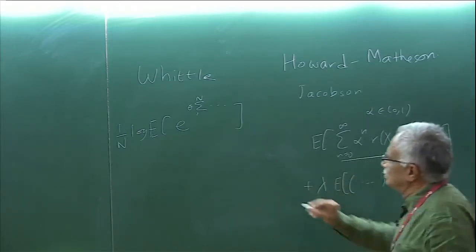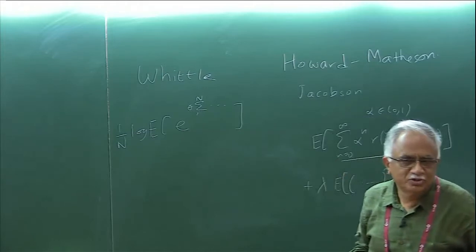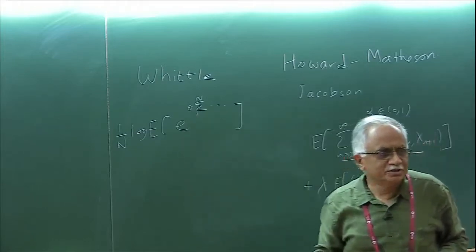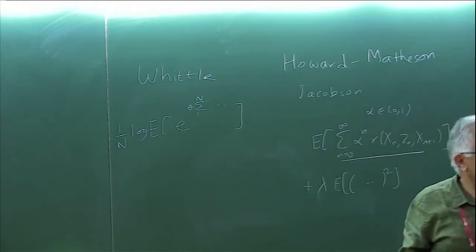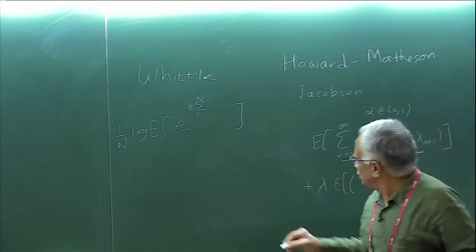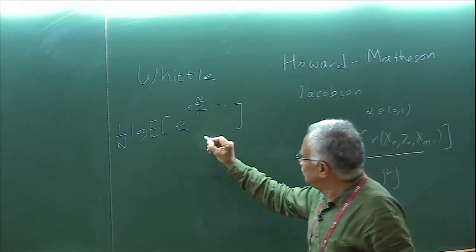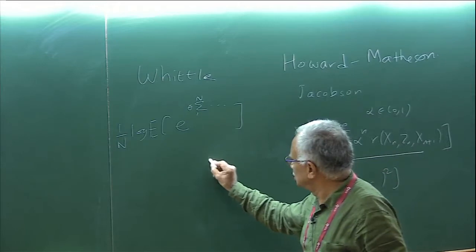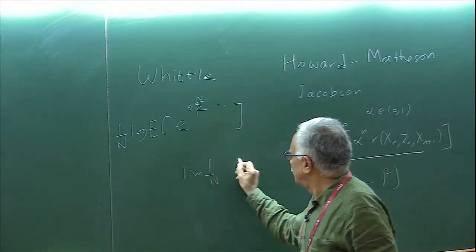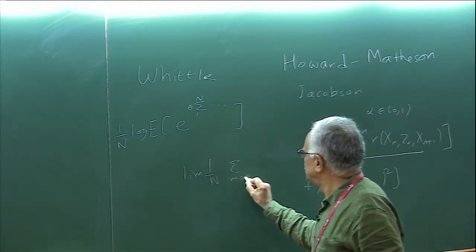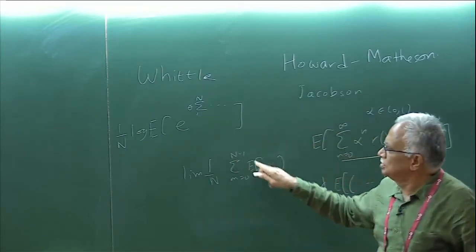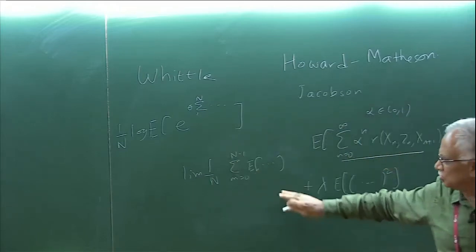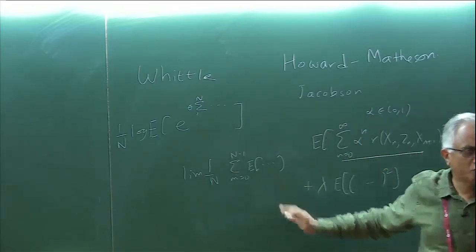Of course, the sign of this matters. If it's positive, which is the usual case, you call it risk averse. If it's negative, you're risk seeking. You are a gambler. Actually, the long run average ends up being the limiting case as theta tends to zero. This is called risk neutral.